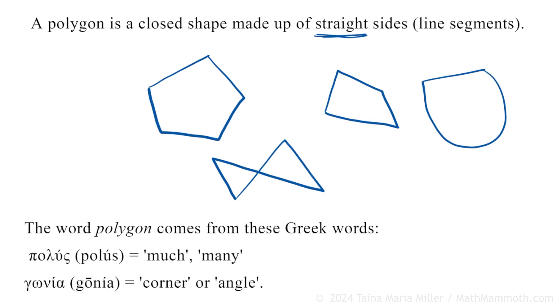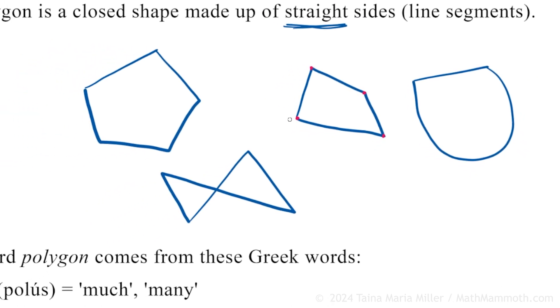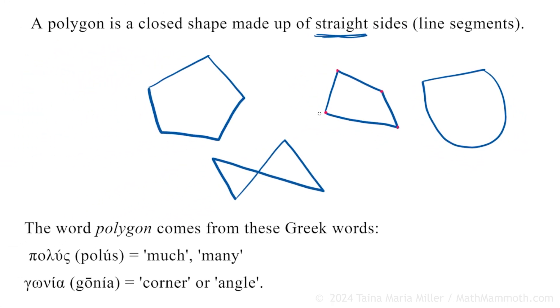The word polygon comes from two Greek words: polus, which means much or many, and gonia, which means a corner or angle. So if I look at this one here, it has many corners — here's a corner, here's a corner, here's a corner, here's a corner. The word polygon actually means many-cornered shape from the Greek language.